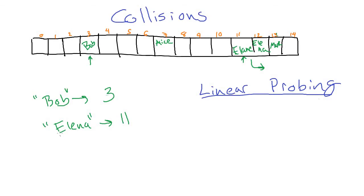We have to store both the keys and the values inside the hash table. If we only stored phone numbers, we wouldn't know whether the number belongs to Elena or someone else. So we look up and check if the key matches the one we're searching for. If it does, we return it. Otherwise, we do the same linear probing — go to the next slot, check the key. In this case slot 12 has Elena, so we return slot 12's value.